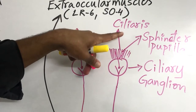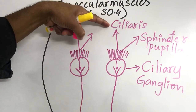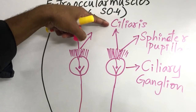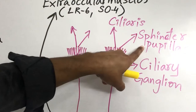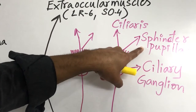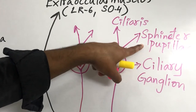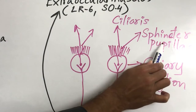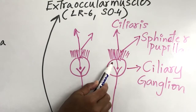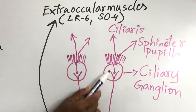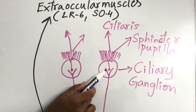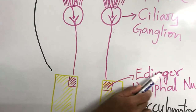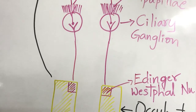In summary, the two muscles supplied by postganglionic parasympathetic fibers from the ciliary ganglion are the ciliary muscle (accommodation reflex) and sphincter pupillae (pupillary constriction in light reflex). The ciliary ganglion receives preganglionic parasympathetic fibers from the Edinger-Westphal nucleus.